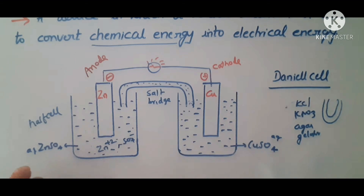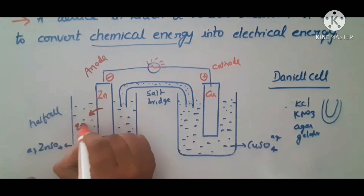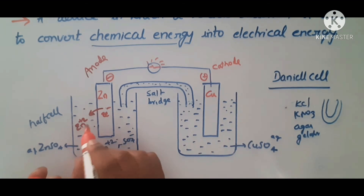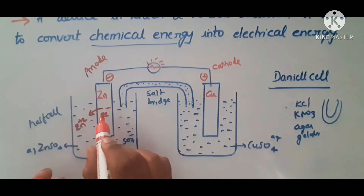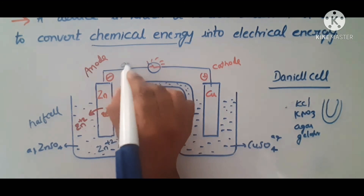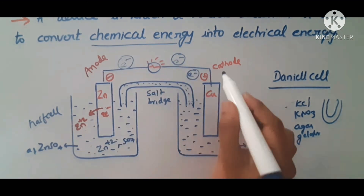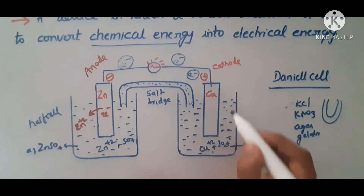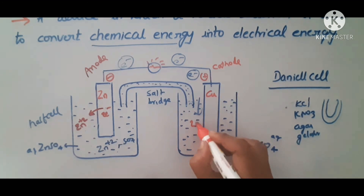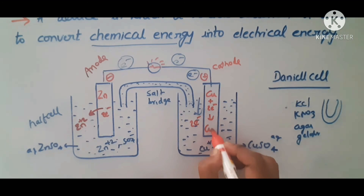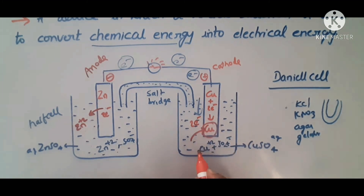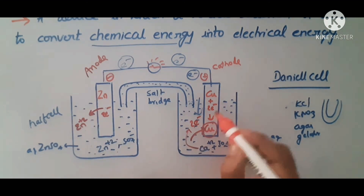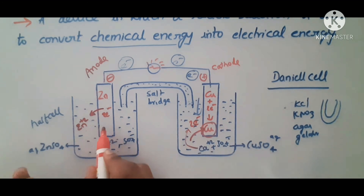At the zinc electrode, zinc atoms lose 2 electrons and form zinc plus 2 ions, which go into solution. These 2 electrons travel through the external circuit. At the copper electrode, copper plus 2 ions from the copper sulfate solution gain those electrons and are deposited as copper atoms. The copper electrode increases in weight while the zinc electrode decreases.